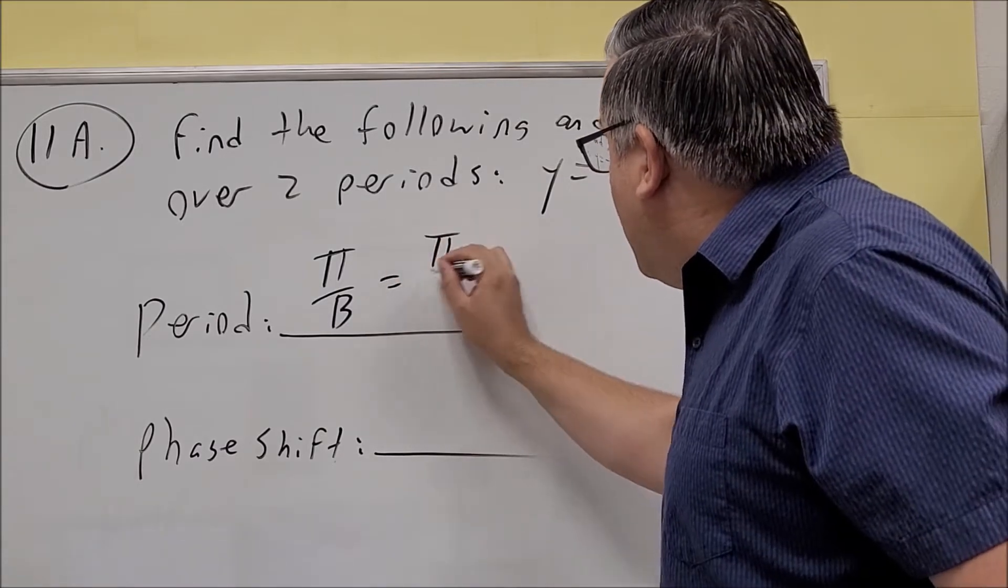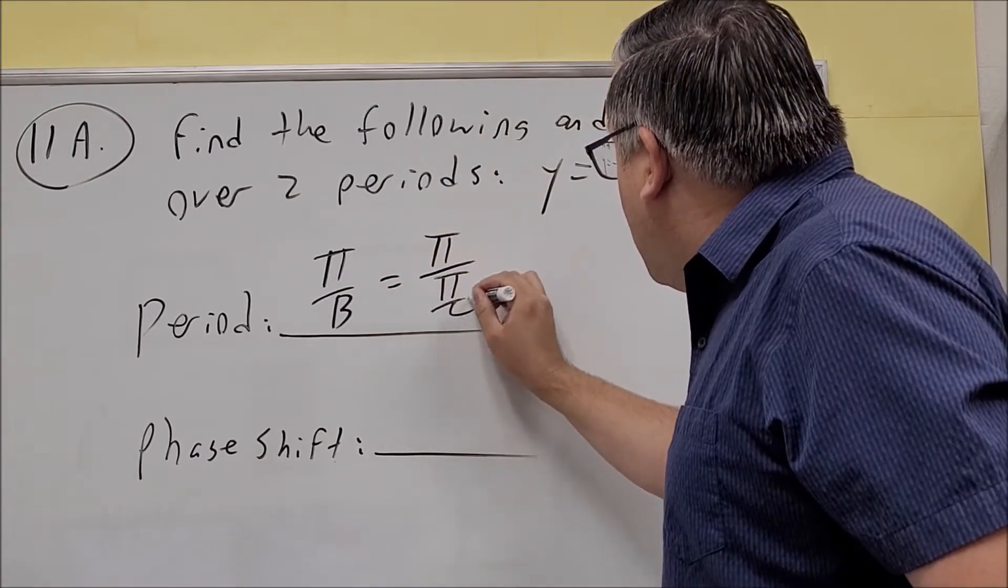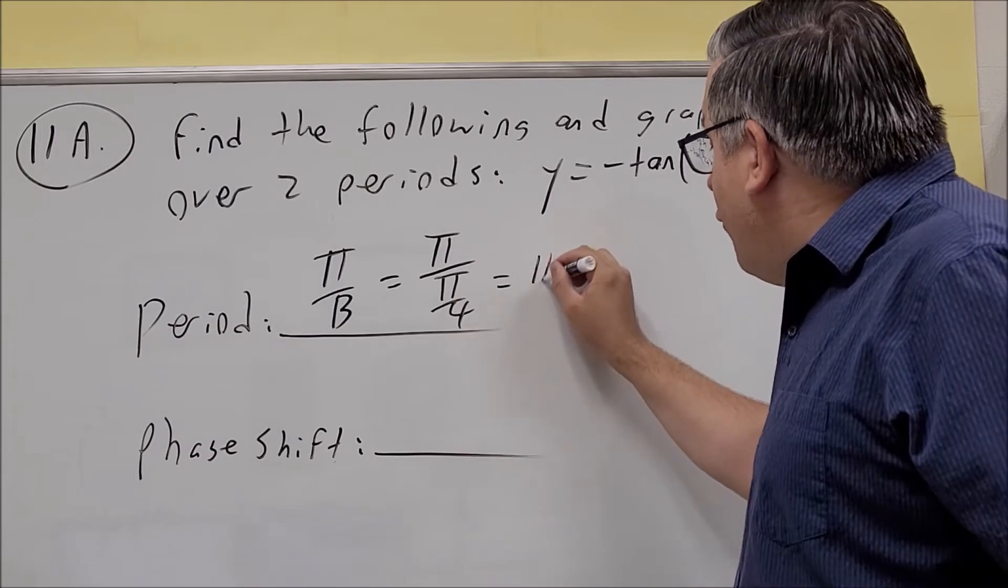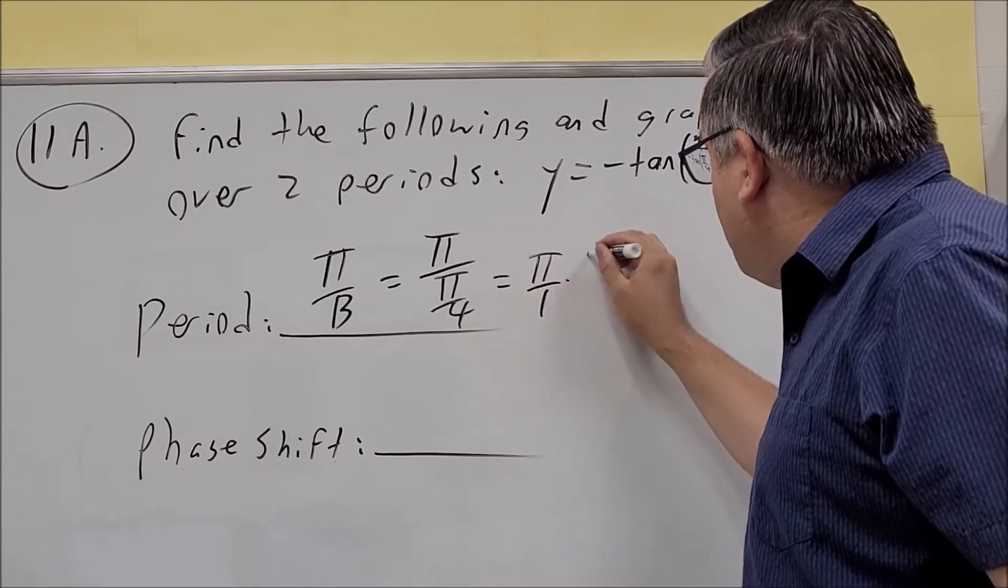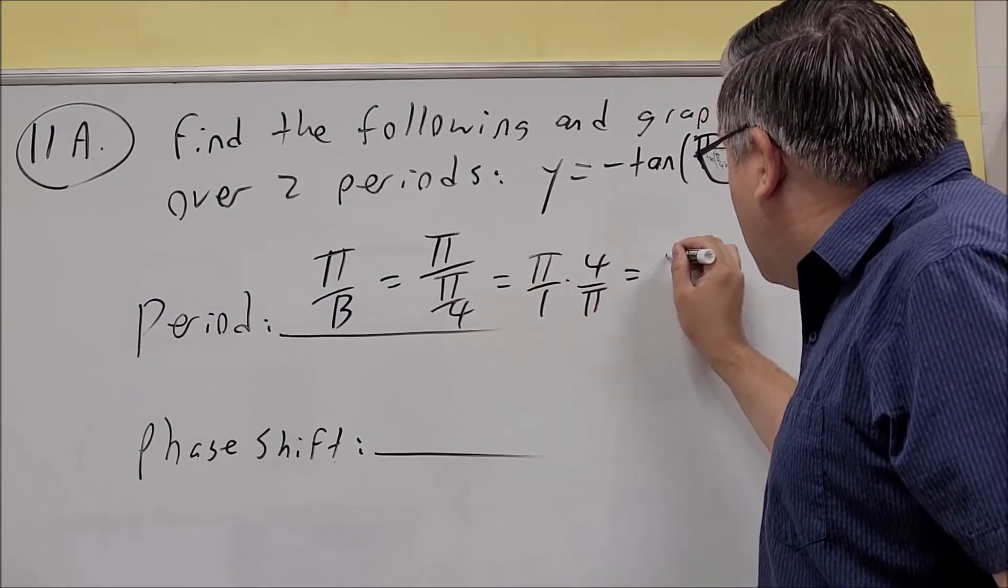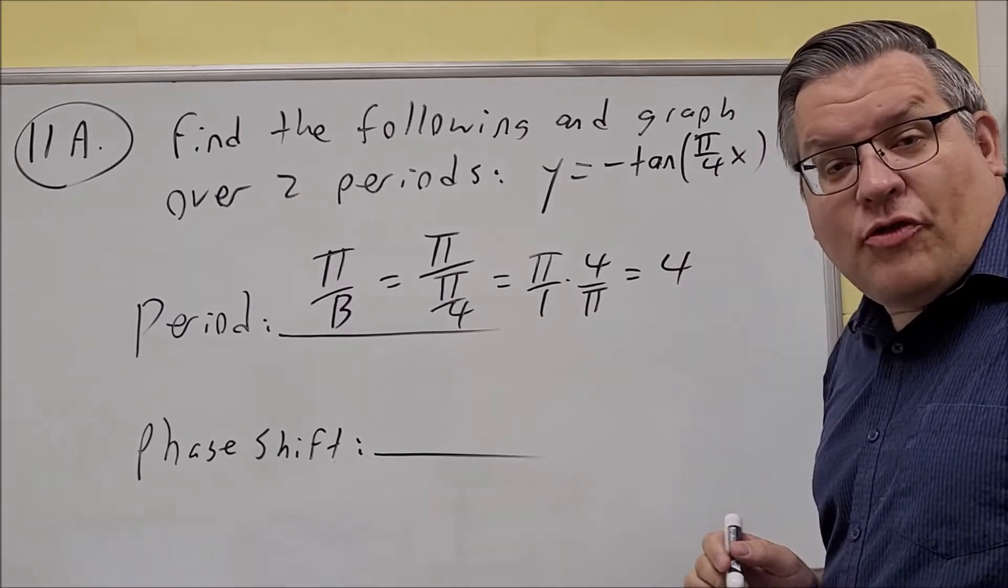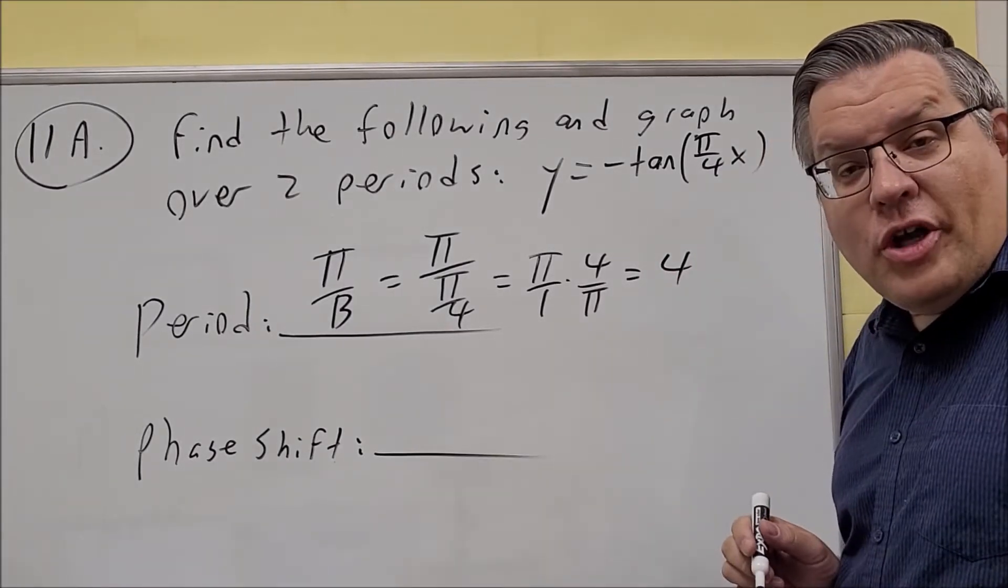So we do π divided by π over 4, and if we flip and multiply, the π's cancel, and we get 4 for the period.